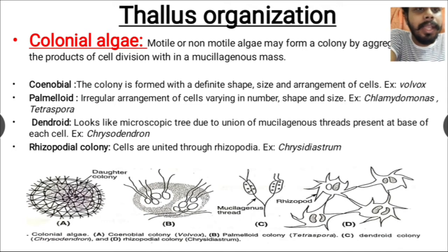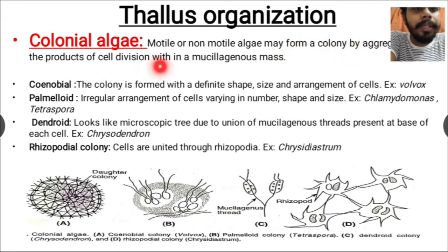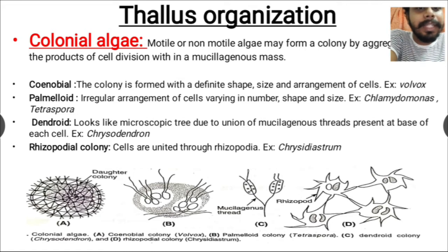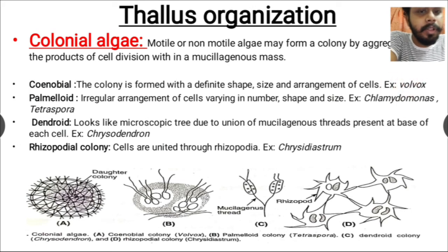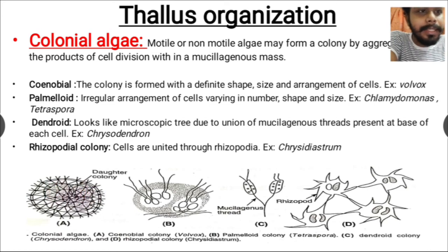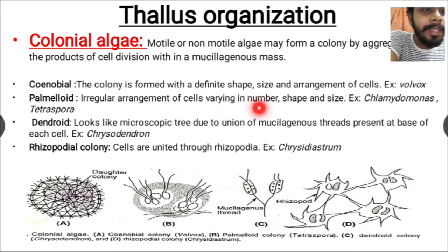Colonial algae are motile or non-motile algae that may form a colony by aggregation of the products of cell division. Different types of colonial algae are present. The first type is coenobial, where the colony is formed with a defined shape, size, and arrangement of cells — example: Volvox. Here we can see they have a definite shape, size, and arrangement.